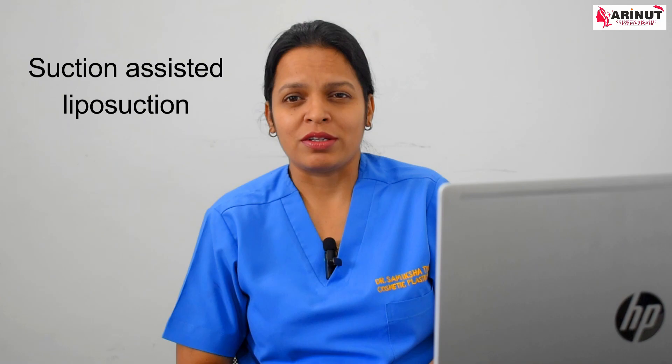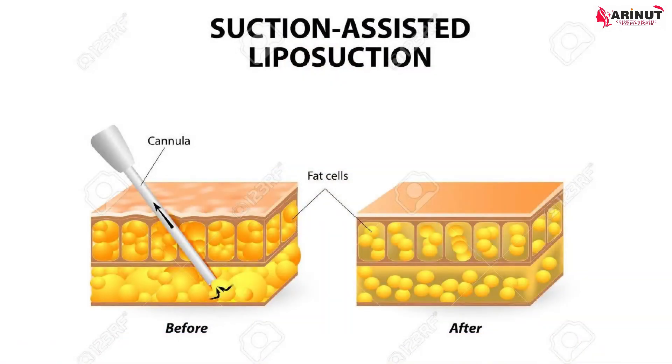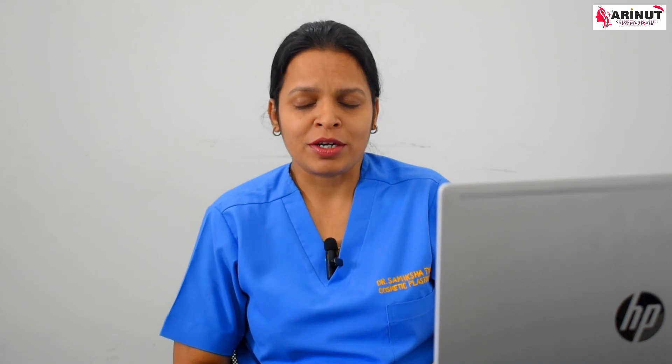The next common technique is suction assisted liposuction, also called traditional liposuction. In this technique, once the fat cells are broken down using a cannula, they are sucked out with the help of a vacuum. This can be done using vacuum machines, or with syringes if we are treating a small area of the body.